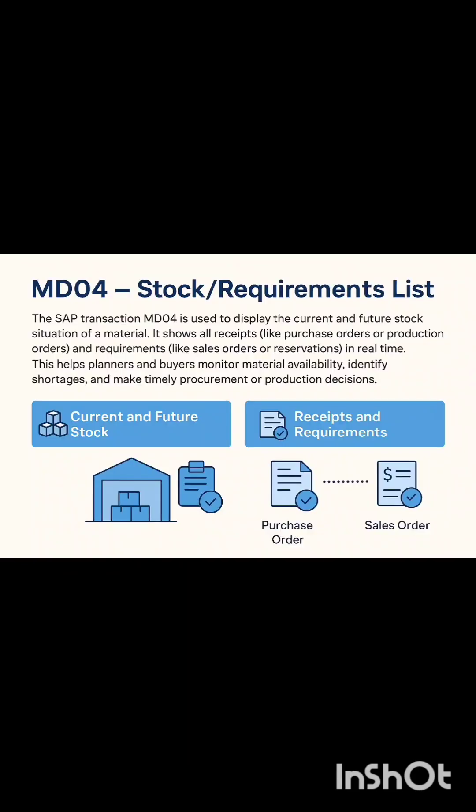MD04 is one of the most powerful transactions in SAP. MD04, or the Stock Requirement List, shows the complete stock situation of a material — both current and future. It displays all receipts like purchase orders or production orders, and all requirements like sales orders or reservations, updated in real time. This helps planners and buyers track material availability, avoid shortages, and make timely production and purchasing decisions. In short, MD04 gives you a live picture of material movement, helping you plan smarter and work more efficiently.